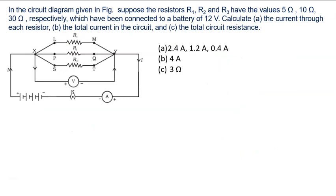So final answer: option A is 2.4 ampere, 1.2 ampere, 0.4 ampere. Part B is 4 ampere. Part C is 3 ohm.